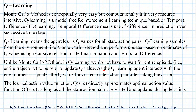Rather, in Q-learning, as the agent interacts with the environment, it updates the Q-value for the current state-action pair after taking the action. The learned action-value function Q(S,A) directly approximates the optimal action-value function Q*(S,A), as long as all the state-action pairs are visited and updated during learning. This we can ensure by selecting an appropriate behavior policy.